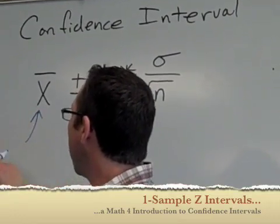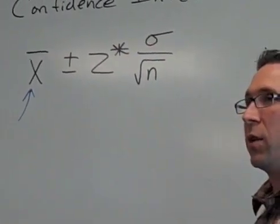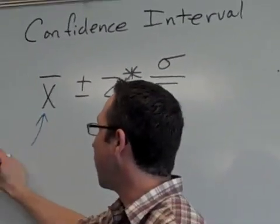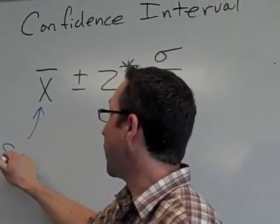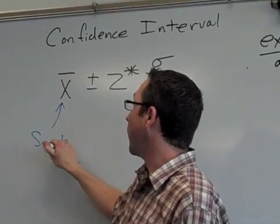It's labeled on your paper, but why don't you re-label it next to the equation on your paper. The x-bar represents who? The sample mean, or the sample average.